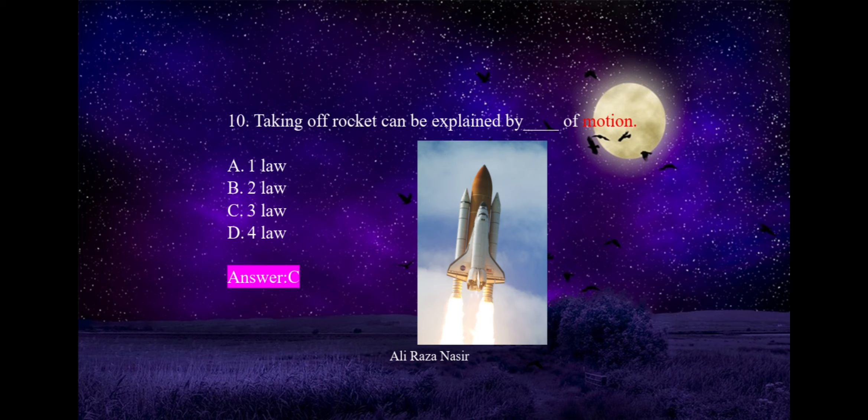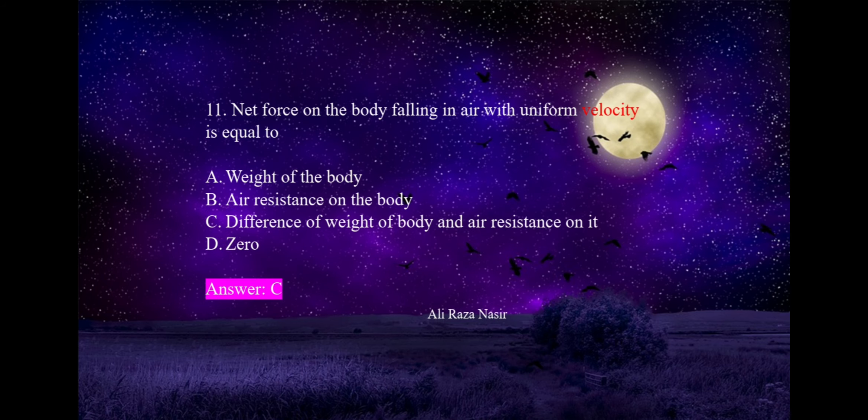Taking off of a rocket can be explained by which law of motion? Option A: first law, option B: second law, option C: third law, option D: fourth law (which doesn't exist). Action and reaction are equal but opposite in direction. The gases escaping from the rocket exert force on the atmosphere, and as a reaction, the atmosphere pushes the rocket upward. Option C, third law, is correct.